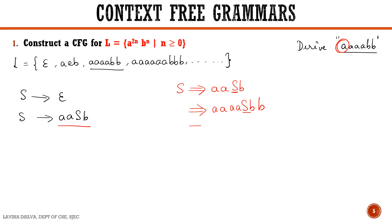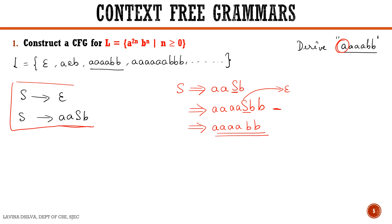Now this S has to be replaced by its production body. We can see that we already have four a's and two b's in the second step, so all we have to do is replace this S by epsilon, and we obtain the string aaaabb. So these two rules help us derive all the strings we require.